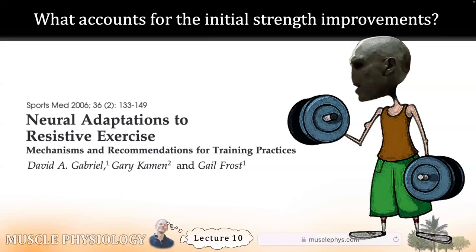So how long before real tissue remodeling occurs? That's tough to estimate because it depends on the person — their genetics, age, the exercises they're performing, frequency, and nutrition. Maybe an average estimate is around six weeks before hypertrophy really begins. Early protein synthesis does happen, but it's just remodeling back to baseline — gluing Humpty Dumpty back together, not making real muscle mass. There may be some connective tissue mass and swelling, but for actual actin and myosin growth, you have to keep at it for a month or two.